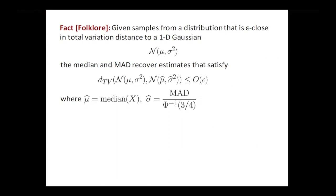These are called robust estimates of location and scale respectively, and this is the prototypical theorem — so basic I don't even know where to attribute it. If you're given samples from a distribution that's epsilon close in total variation to a Gaussian, then computing the median and median absolute deviation — with a correction term phi inverse of three quarters to make MAD an unbiased estimator when there's no noise — gives you parameters mu hat and sigma hat squared that are within a constant times epsilon of the original Gaussian. It's provably robust and obviously computationally efficient.